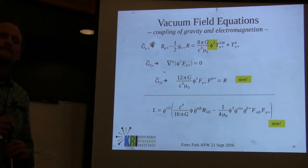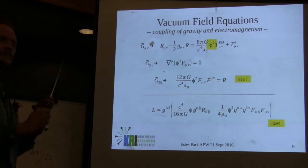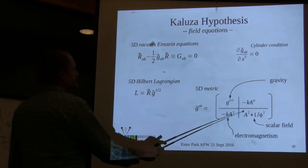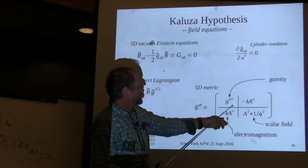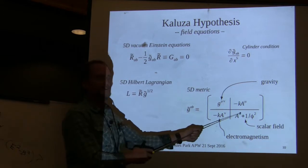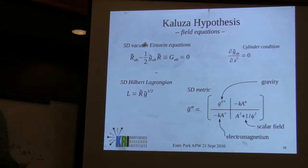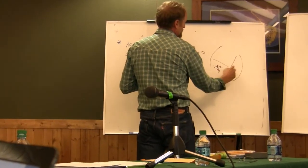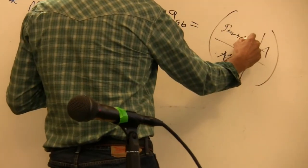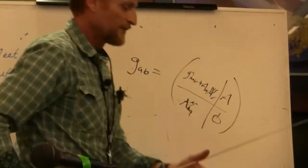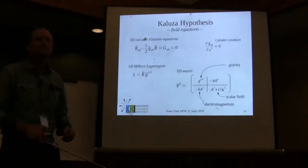Regarding the A squared term from the five-five component of the five-dimensional metric: it's the contraction of the electromagnetic four-vector potential, and it's in there. The regular metric actually has a quadratic term in A's and just phi in the corner. Everything's accounted for - we've got fifteen equations and fifteen unknowns.